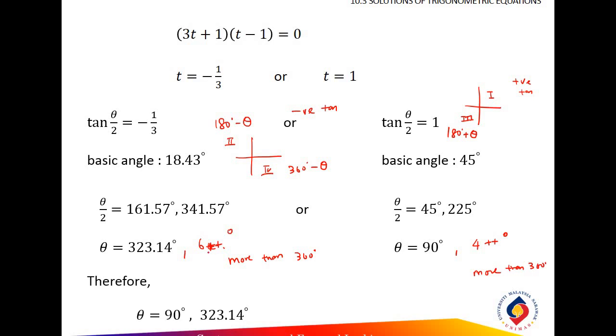So therefore, you answer only 2 — this one you reject, and this one also you reject because it's more than 360 degrees. So that's it. That's all for our last video. Thank you.